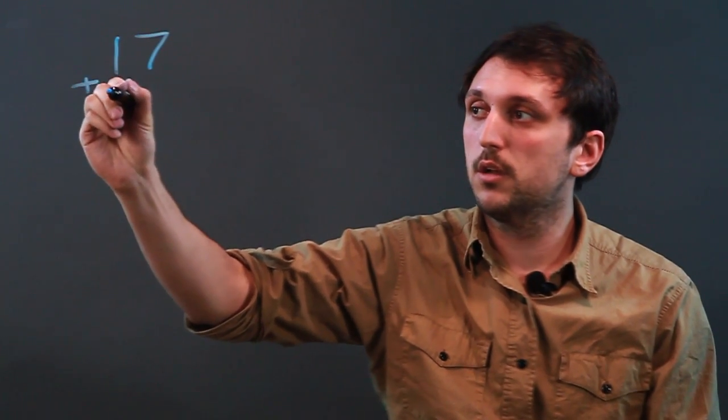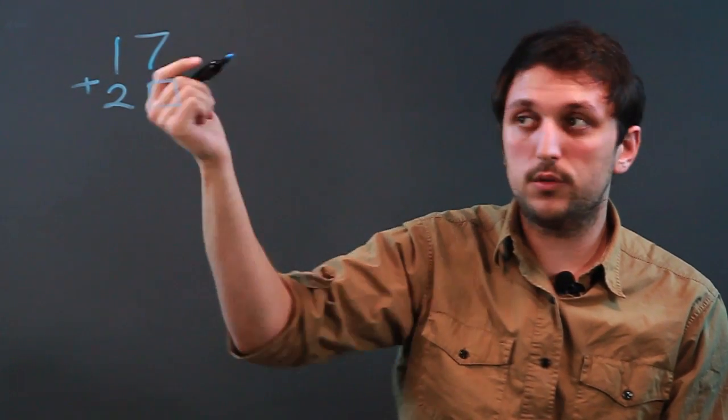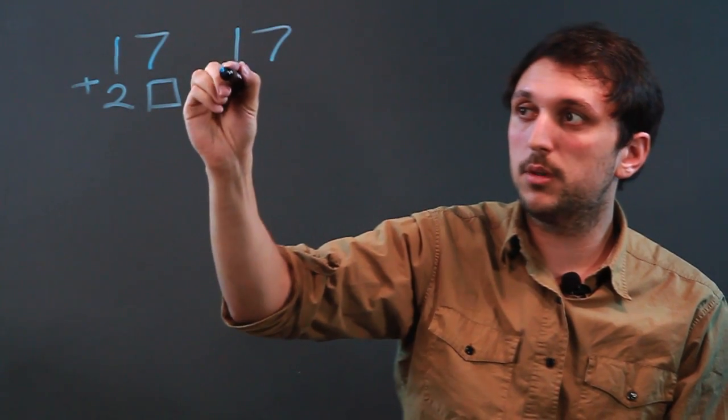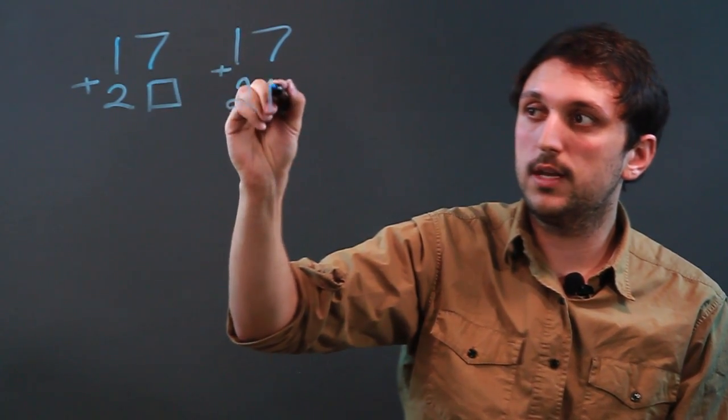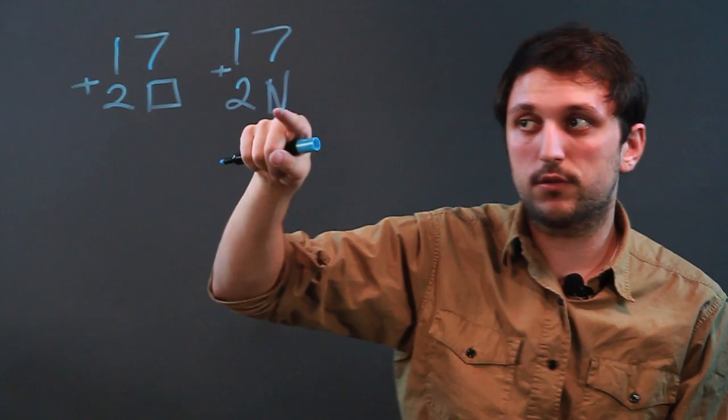Now, let's start with a simple one. Let's start with 17 plus 20, we don't know. And another way to do this is to say 17 plus 2n, and n represents a digit, not just a number.